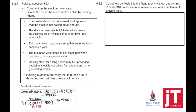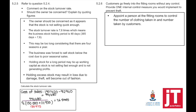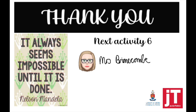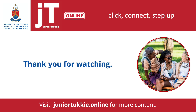Question 5.2.6: internal control — customers go freely into the fitting rooms without any control. Provide one internal control measure to prevent theft. We can appoint a person at the fitting rooms to control the number of clothing items taken in and taken out by customers. Another option: appoint a security person at the entrance, or put security tags on the clothing which will set off an alarm at the entrance. These are all possibilities to ensure stock does not go missing. Thank you very much. Next we're going to look at Activity 6. Remember: it always seems impossible until it is done. Have a wonderful day.